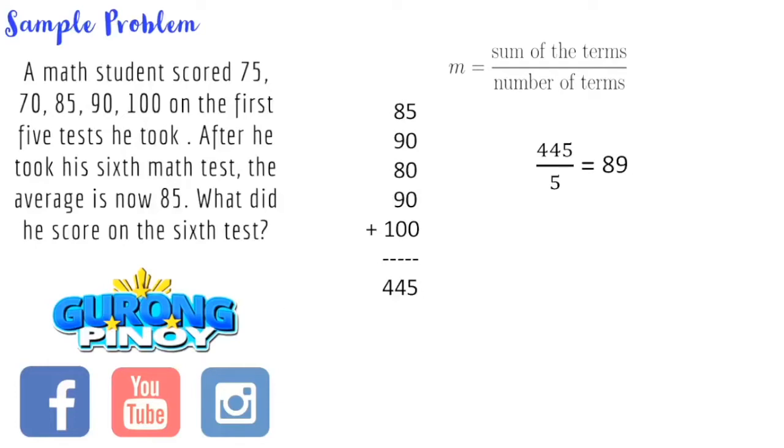A math student scored 75, 70, 85, 90, and 100 on the first five tests he took. After he took his sixth math test, the average is now 85. What did he score on the sixth test? Now this type of problem is very common in civil service, and this type of problem is very tricky since we are not given all the scores, and we're not simply asked to get the average, but we are given 5 scores, we are given the average of 85, and we are asked for the sixth score in this test. So what do we do? What is the trick that we can use here?